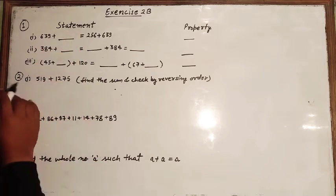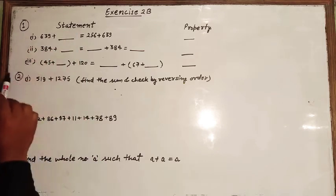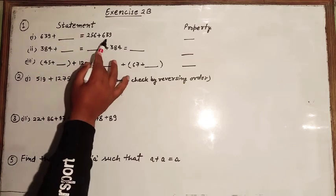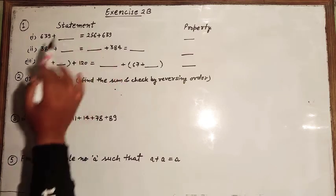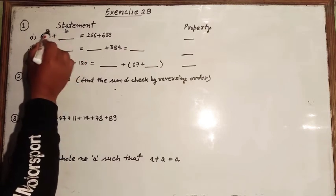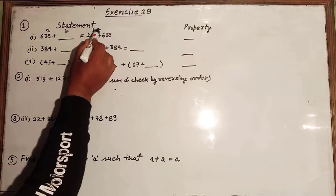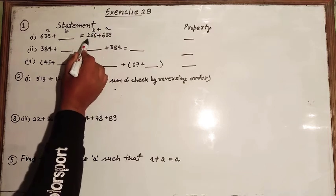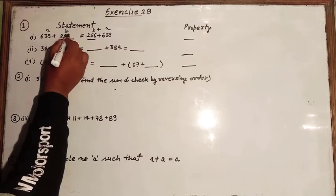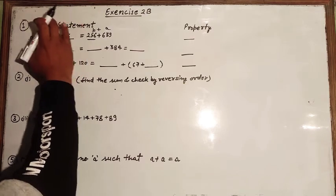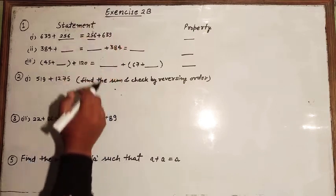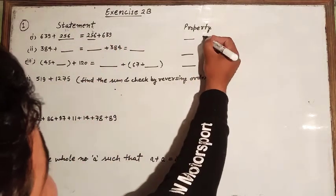The first one is: 639 plus what equals 256 plus 639. We can call this a plus b equals b plus a. Here a is 639 and b is 256, so we write 256 in the blank. This property is known as the commutative property.